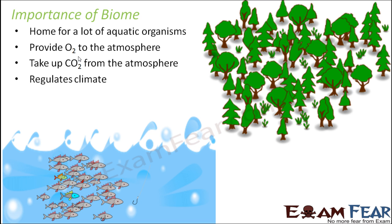What is the importance of biomes? Biomes are a home for a large variety of aquatic organisms — a huge variety of fishes, aquatic plants, and other aquatic organisms live there. They also provide oxygen to the atmosphere. Biomes contain a huge number of plants; when you look at grasslands or forests, they have a huge number of plants which take in carbon dioxide and give out oxygen to the atmosphere. That is how biomes maintain the right balance of oxygen and carbon dioxide. They also help regulate the climate — rainfall, floods, etc. can be regulated due to the presence of plants.